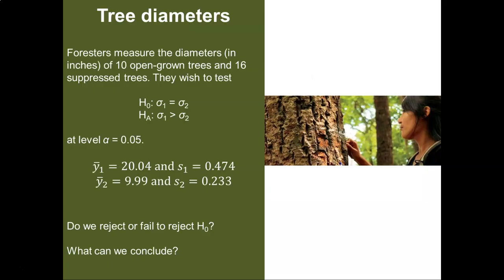As an example, we can look at tree diameters. We're going to go through an example using this to see if these variances are equal between two different populations of trees. Foresters have measured the diameters in inches of 10 open grown trees and 16 suppressed trees. They want to test their null hypothesis: are the standard deviations equal versus is the standard deviation from population one greater than the standard deviation from population two, using a level of significance of 0.05.